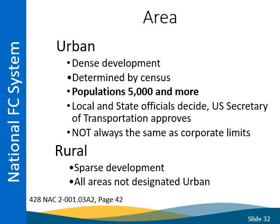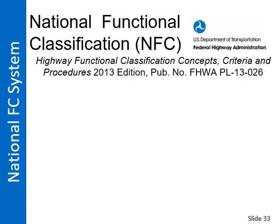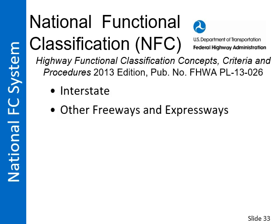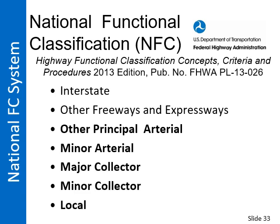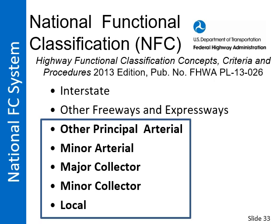There are seven classifications in the national system: interstate, other freeways and expressways, other principal arterial, minor arterial, major collector, minor collector, and local. Urban areas and rural areas both use these classifications. Classifications typically applying to roads and streets within counties and municipalities include minor arterial, major collector, minor collector, and local, although most of the other principal arterial classification is on the state highway system. Interstate is always, and other freeways and expressways are typically, on the state highway system.